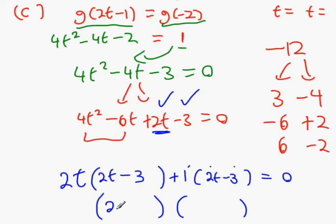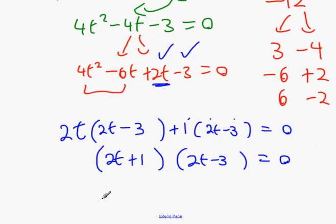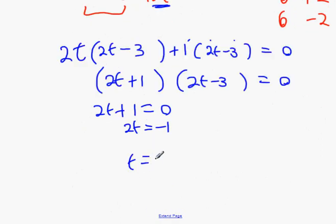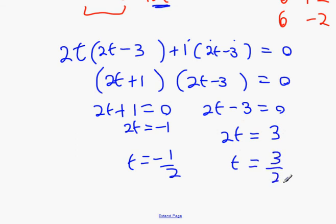Now to finish it off. 2t minus 3 and then 2t plus 1, either way around whichever one suits you. Now finally finishing this off. 2t plus 1 equals 0, 2t equals minus 1, t equals minus 1 over 2. 2t minus 3 equals 0, 2t equals 3, t equals 3 over 2.